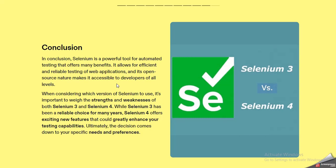For the conclusion, you should say to the interviewer that Selenium is a powerful tool for automation testing with many benefits. It allows for efficient and reliable testing of web applications, and its open source nature makes it accessible to developers. When considering which version of Selenium to use, it's important to weigh the strengths and weaknesses of both Selenium 3 and Selenium 4. While Selenium 3 has been a reliable choice for many years, Selenium 4 offers exciting new features that could greatly enhance testing capabilities, and the decision comes down to specific needs and preferences.